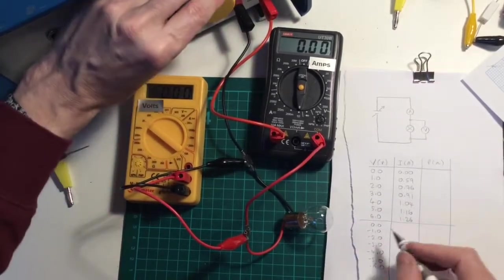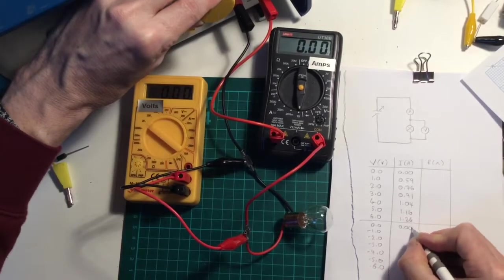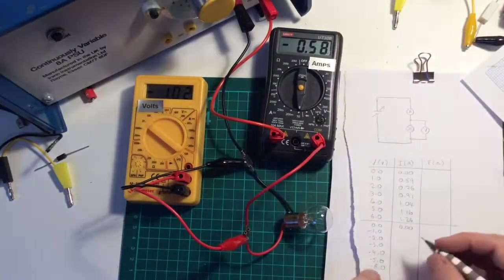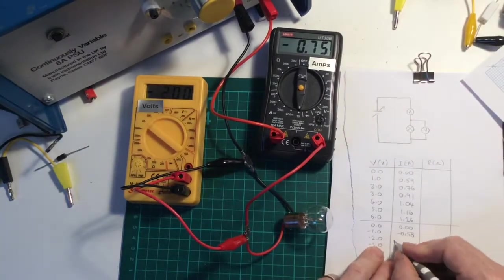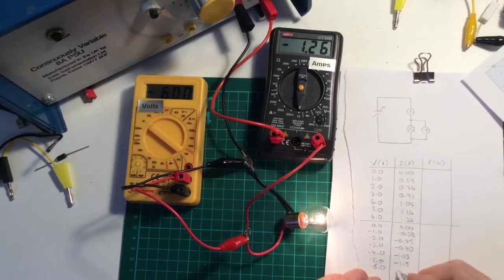So my first reading is zero and I've got zero amps. Let's go to minus one volt, minus 0.58, minus 0.75, minus 0.9, minus six is minus 1.26.